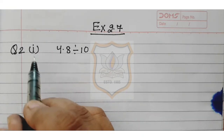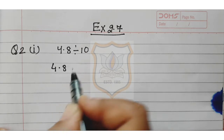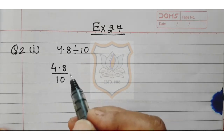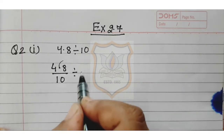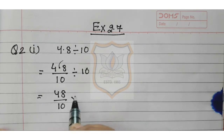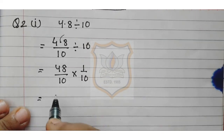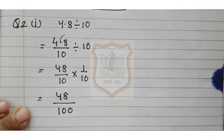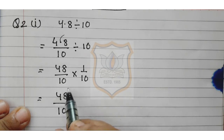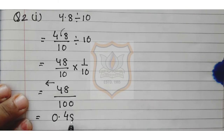Let's solve question 2, part 1: 4.8 divided by 10. We write 4.8 upon 10 to remove the decimal, giving 48 upon 10. Divided by 10 upon 1. That equals 48 upon 10, multiplied by 1 upon 10, which is 48 upon 100. There are 2 zeros, so the decimal moves 2 digits to the left. Our answer is 0.48.